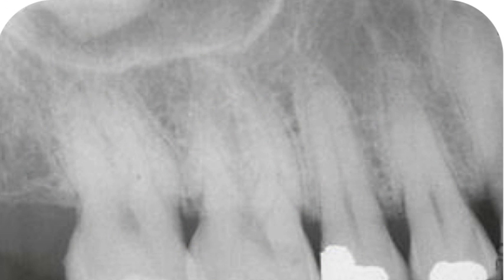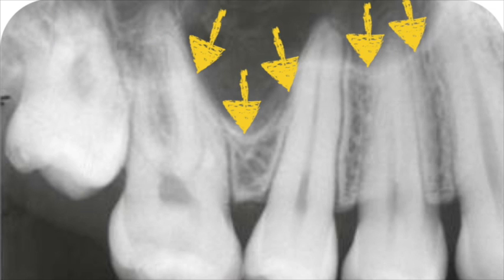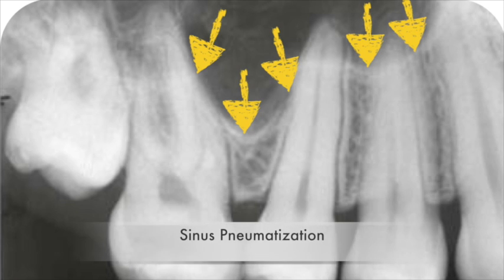In some patients, the floor is well above the roots of the maxillary teeth, with bone being present between the roots and the floor of the maxillary sinus. While in others, the floor may follow the roots more closely, and sometimes even wrapping itself around the roots — a condition known as pneumatization.